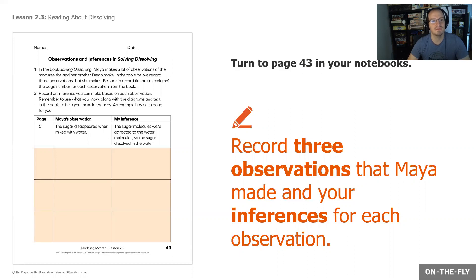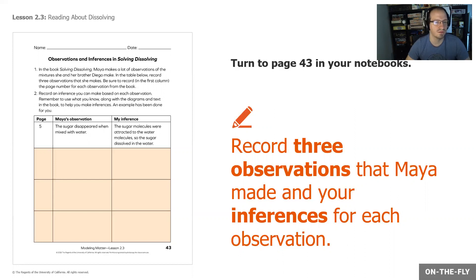An example has been done for us. On page five, Maya observed that the sugar disappeared when mixed with the water, and our inference was that the sugar molecules were attracted to the water molecules, so the sugar dissolved in the water. Go ahead and answer those three questions now. Remember you want the page number, Maya's observation, and your inference for each of the three responses.